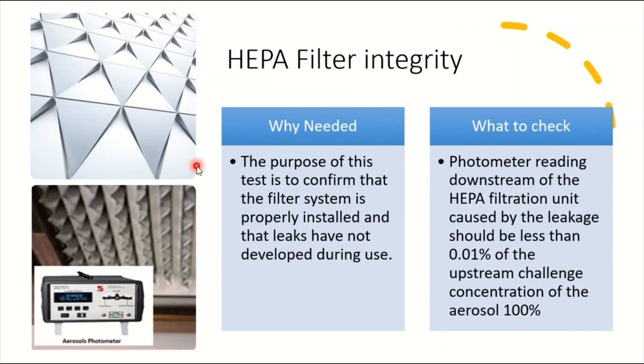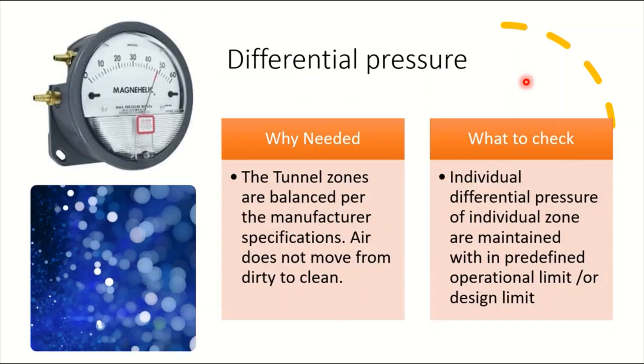Next, HEPA filter integrity test should be done. While performing qualification, we should check that the HEPA is integral with no leaks, even during installation. This is one of the very important aspects of tunnel qualifications. What to check: photometric reading in downstream HEPA filter unit. Leakage should be less than 0.01% of the upstream challenge concentration of 100%.